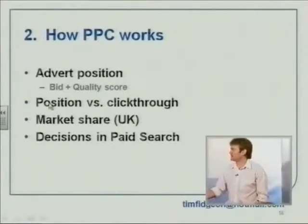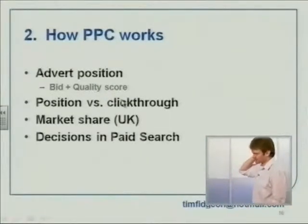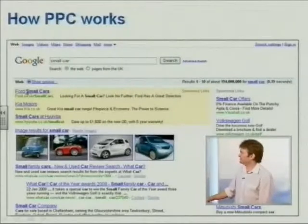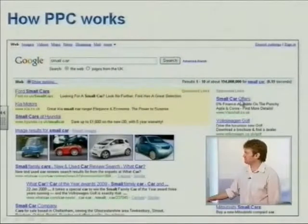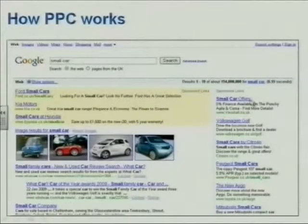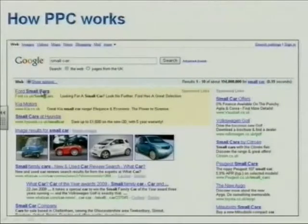We'll talk about position and click-through, and market share in the UK — it's not going to shock anyone that Google comes out top. Then some things you need to think about in a paid search campaign. So: how PPC works — these are the three slots you really want, then four, five, six, etc. Where your advert appears is a combination of your bid — how much you're willing to pay. All things being equal, if everyone's quality score were identical, the person prepared to pay most per click is number one. It's like an auction.